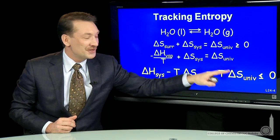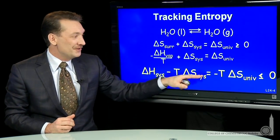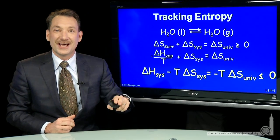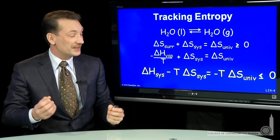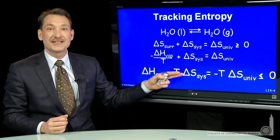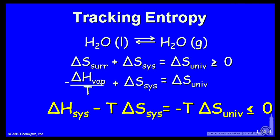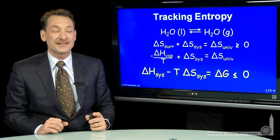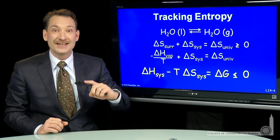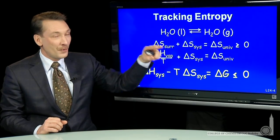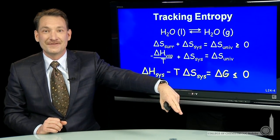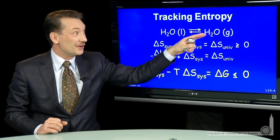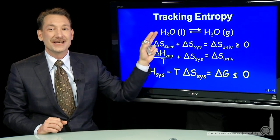Now this measure of the entropy minus T delta S is so important because it's measured just by system variables that we give it a special name. We give this the name delta G, the Gibbs free energy of the system. And when the Gibbs free energy of the system is less than or equal to 0, the forward process is favored. When it's equal to 0 exactly, you're in equilibrium.